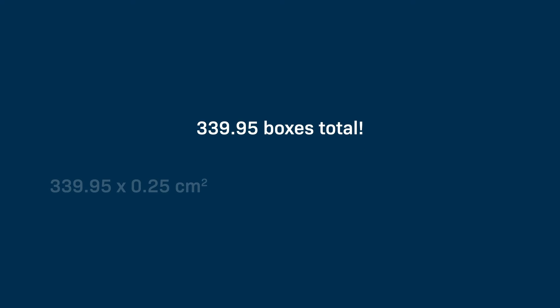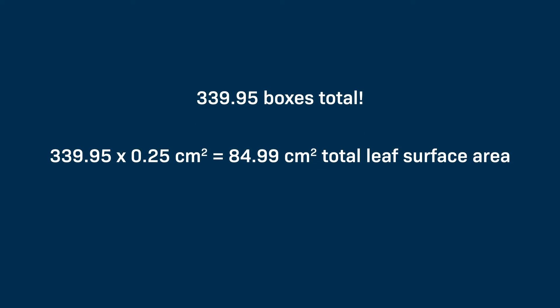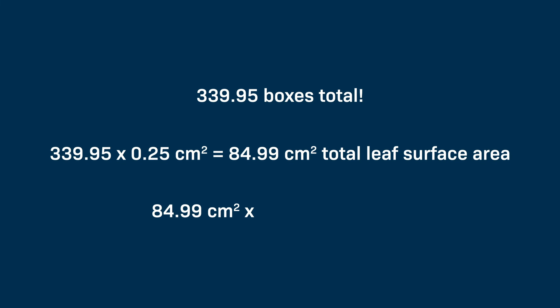Each box represents 0.25 square centimeters, so that's 84.99 square centimeters total leaf surface area. To convert that to square millimeters, I need to multiply by 100, so my leaf is 8,499 square millimeters. Now that I have this value, I'll be able to calculate the rate of transpiration per millimeter of leaf surface area later in the experiment.